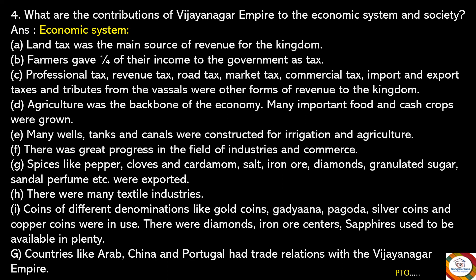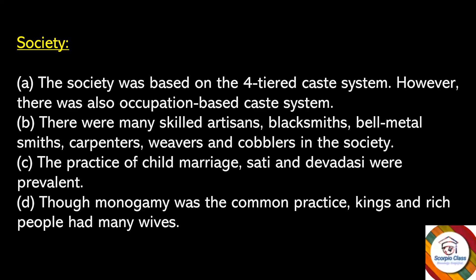Regarding society: it was based on the four-tiered caste system, though there was also an occupation-based caste system. There were many skilled artisans — blacksmiths, bell metal smiths, carpenters, weavers, and cobblers. The practices of child marriage, Sati, and Devadasi were prevalent. Monogamy was the common practice, though kings and rich people had many wives.